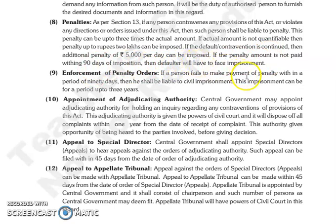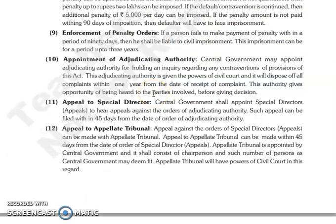अगर वो penalty pay नहीं करता है within 90 days जब उसके उपर impose की गई है penalty, तो जो defaulter है उसे imprisonment हो सकती है, और जो imprisonment है वो होगी up to a period of three years.